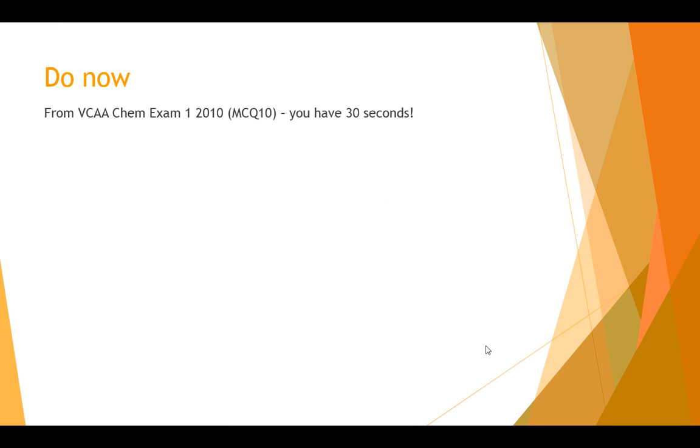Let's start off with a warm up. Do now. When I say go or when the question comes up, you'll have 30 seconds to do a question from the VCAA exam from 2010, exam number one. It's multiple choice question number 10. You have 30 seconds from when you see it. And it's going to start in three, two, one, go.